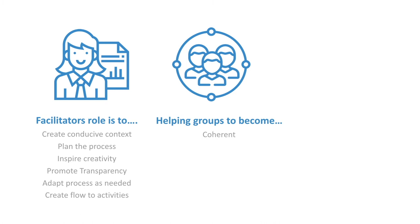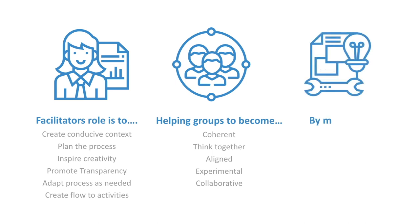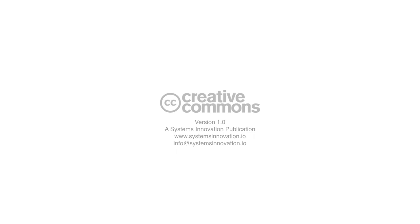The facilitator's aim is to help groups become more coherent, think together, aligned, experimental, and collaborative — with members sharing ideas, being open, listening, thinking, and problem solving. The guide is Creative Commons and open source, so you're free to download and use it as you see fit. We do recommend having an experienced facilitator if you're planning to run a lab. This is the first version, still in beta mode — we're iterating through it and learning to see what works and updating it over time.